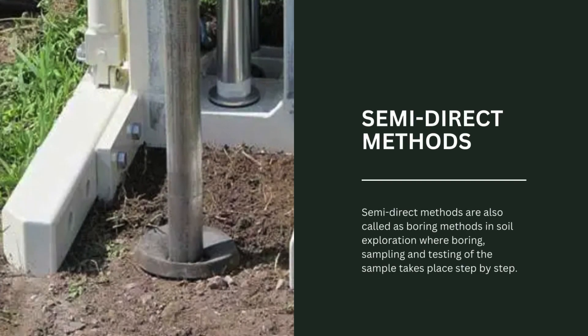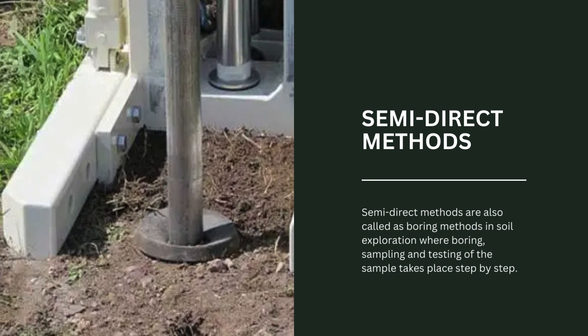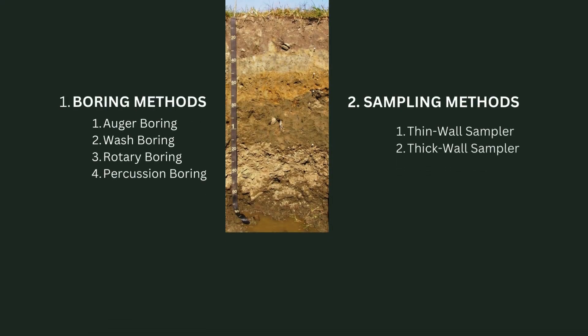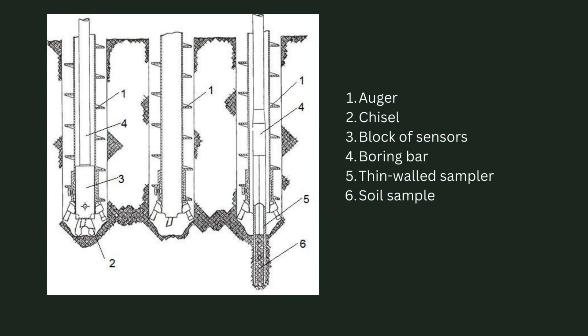Semi-direct methods are also called boring methods in soil exploration, where boring, sampling, and testing of the sample takes place step-by-step. When soil has to be explored at a larger depth, we use boring methods with special equipment to bore a hole at greater depth to collect samples. Boring is performed using various methods like auger boring, rotary drilling, wash boring, and percussion drilling, while sampling is performed using different samplers such as thin wall tube samplers or thick wall samplers. Boring and sampling go hand in hand during the process. What we choose is the type of sampler used with the type of boring machine to collect the sample. After boring and sampling, we conduct soil testing.